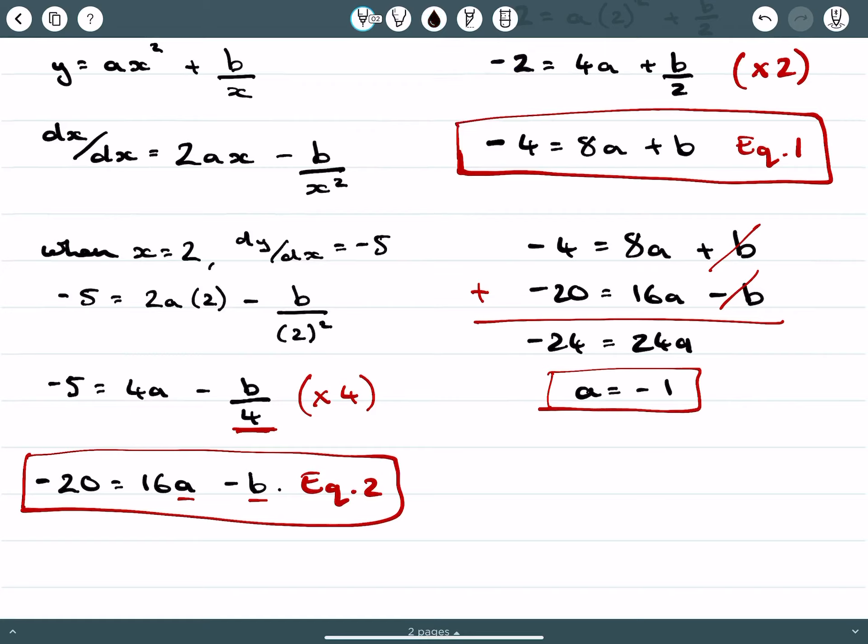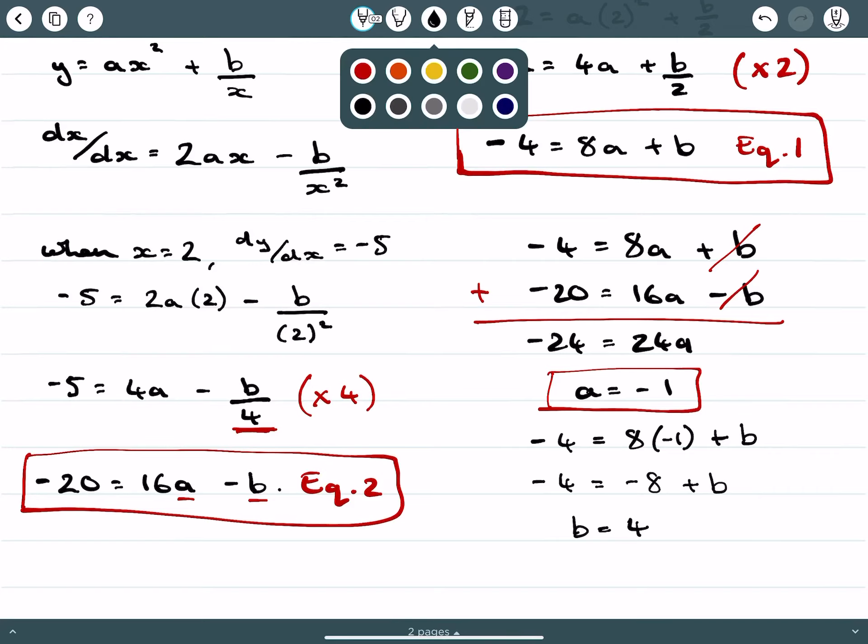I haven't finished because I need to establish what b is. Using the first equation with a equaling negative 1, I get negative 4 equals negative 8 plus b, so b equals 4. This is the correct answer.